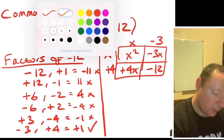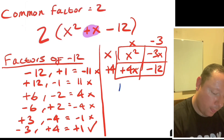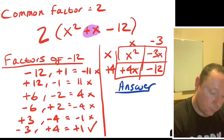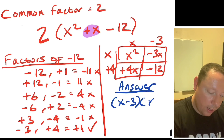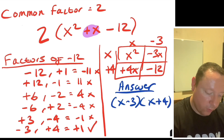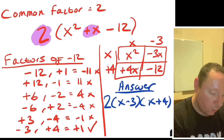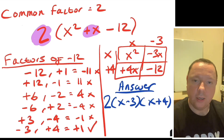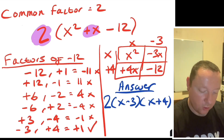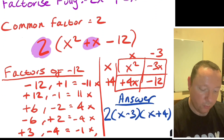The final answer, written in blue, is x minus 3 times x plus 4. But don't forget to include the 2 in front — your common factor from the beginning. So the full answer is 2 times x minus 3 times x plus 4. Otherwise you haven't answered the full question.